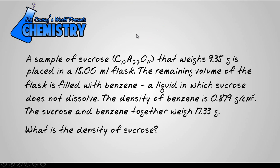What we see here is we have a density that we're looking for and density is mass divided by volume. So let's take a look at all our numbers. We've got 9.35 grams of sucrose. It's in a 15 milliliter flask.